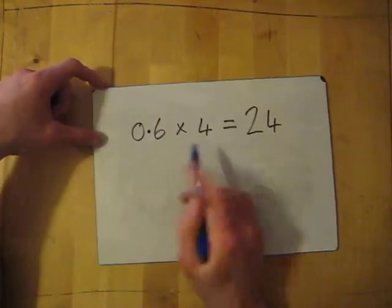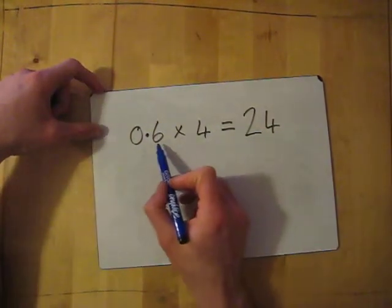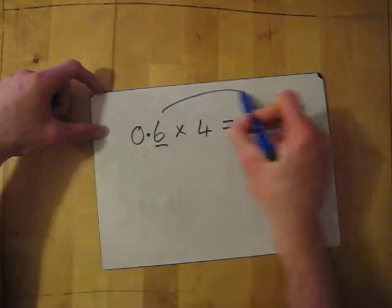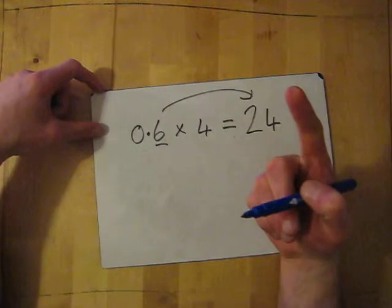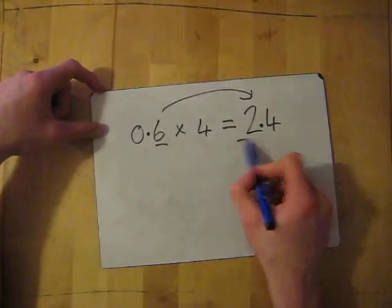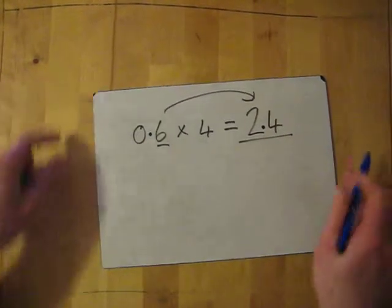Then I look at the question, how many decimal places are in my answer. So how many numbers are after the decimal? I've got 1 here, so that means in my answer, I have to have 1 decimal place as well. So just pop in the decimal, so my answer to 0.6 times 4 is actually 2.4. Easy.